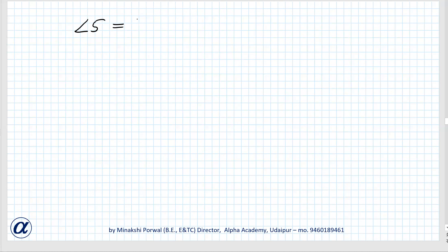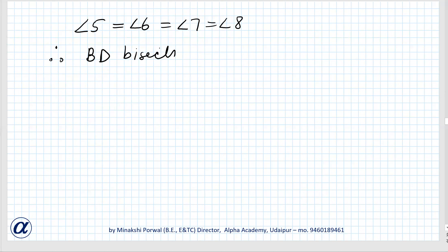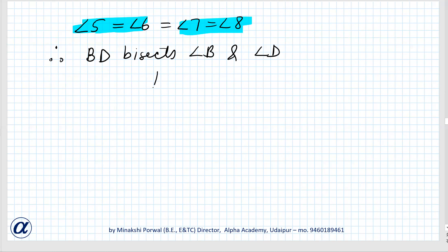So all angles are equal: angle 5 equals angle 7, angle 6 equals angle 8, and angle 5 equals angle 8. Therefore angle 5 equals angle 6 equals angle 7 equals angle 8. Hence, BD bisects angle B and angle D. Hence proved.